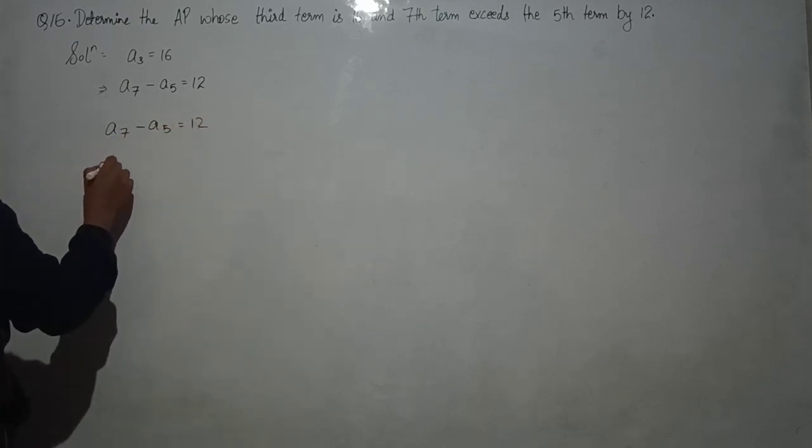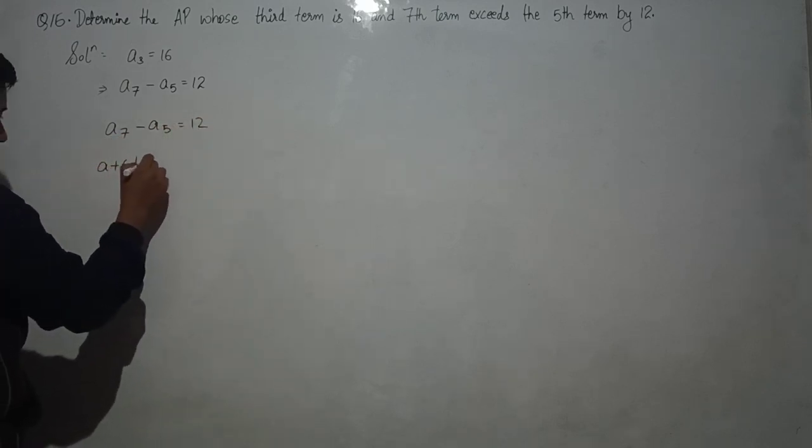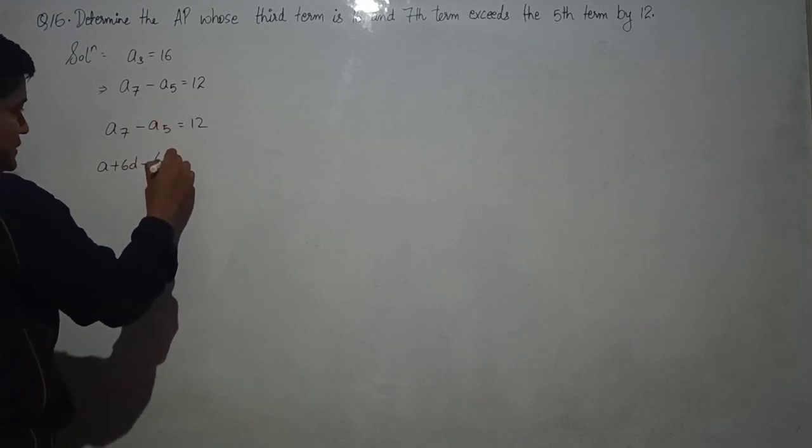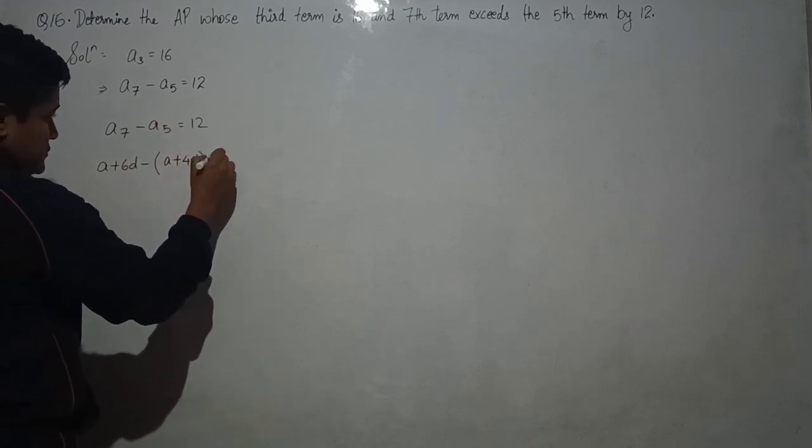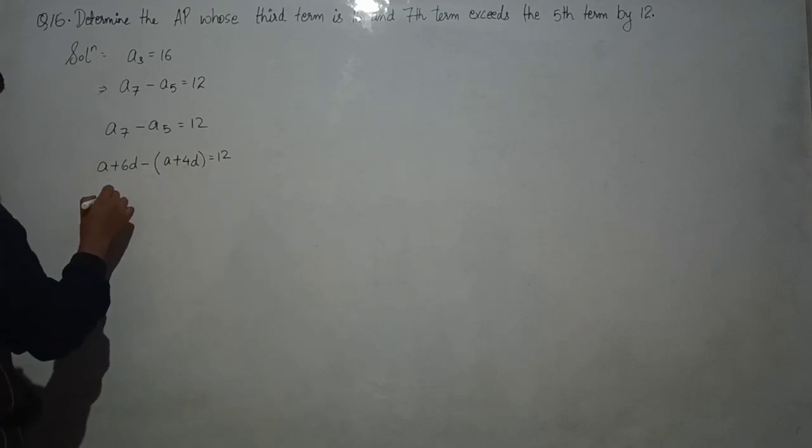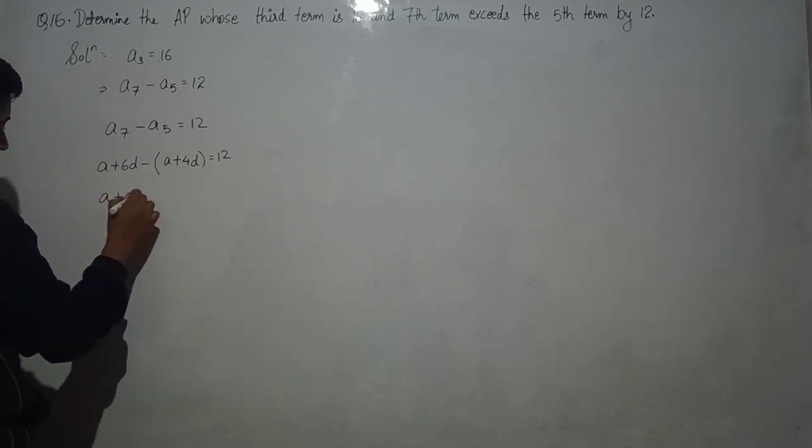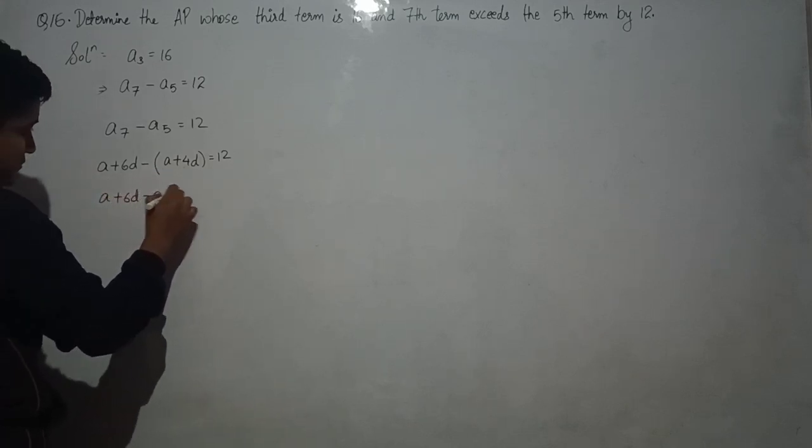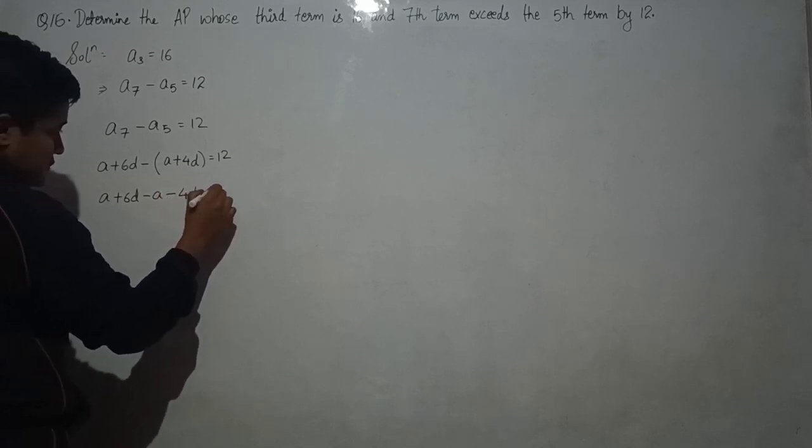A7 can be written A plus 6D minus A5, A plus 4D equals to 12. So A plus 6D minus A minus 4D equals to 12.